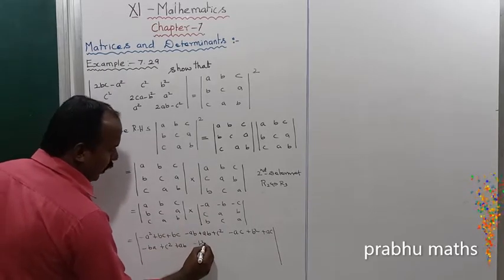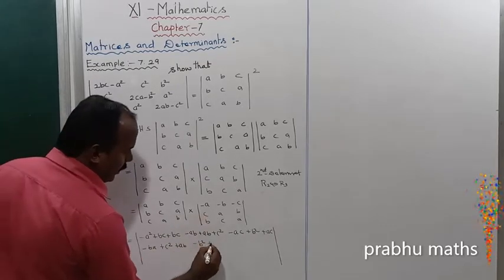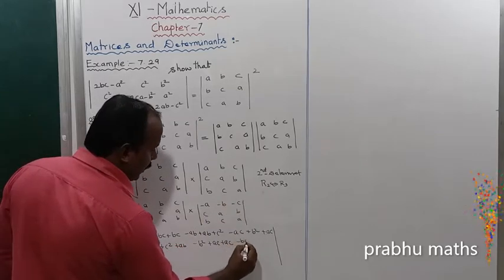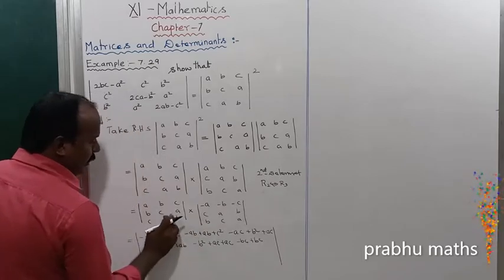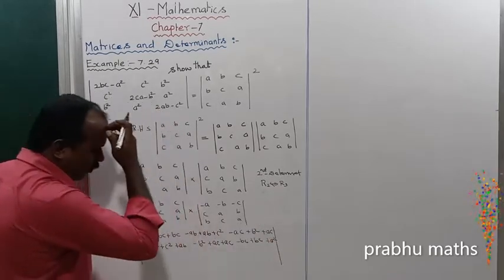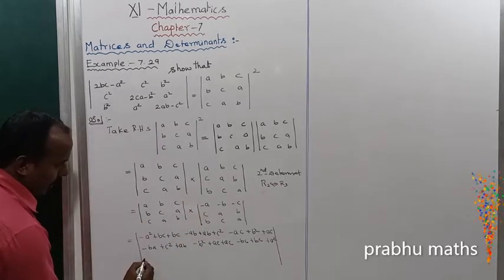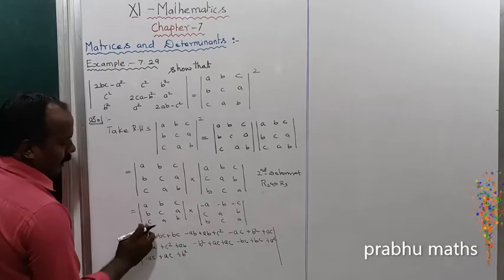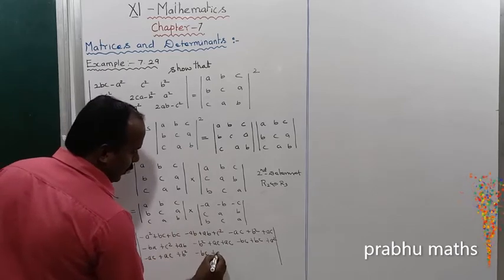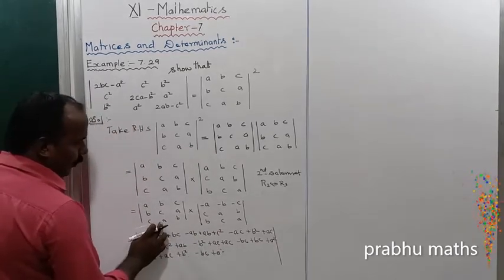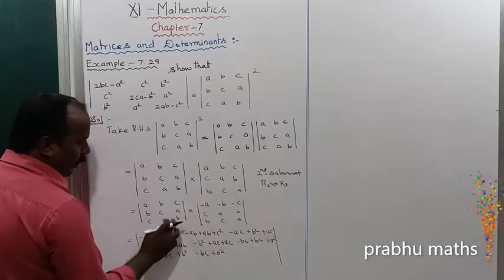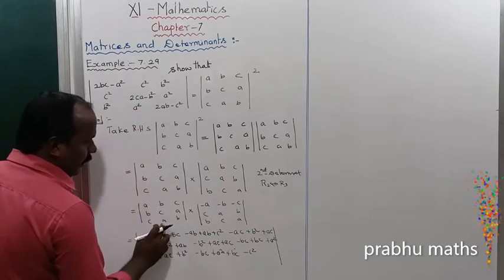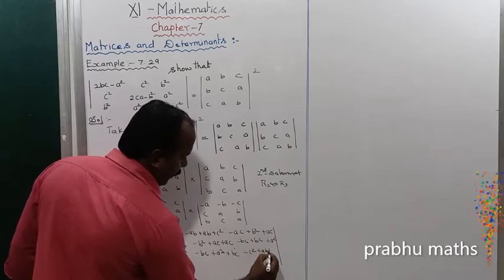Further computation: a into c, then a into a gives plus a square, and again a into a plus a square. Then a into c, a into b, a into a gives a square. A b into b gives plus ab. C into c gives minus c square. A into b plus ab plus ab.